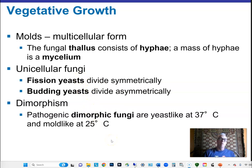Dimorphism is a property exhibited by some disease-causing fungi, in which they are yeast-like at 37 degrees — body temperature — but if you grow them at room temperature, a cooler temperature, they form mold-like multicellular structures. Pretty interesting.